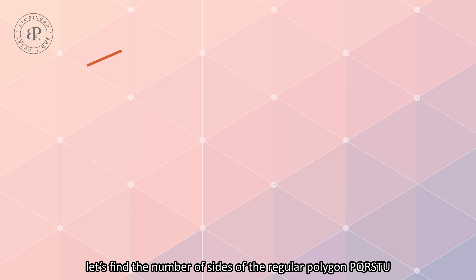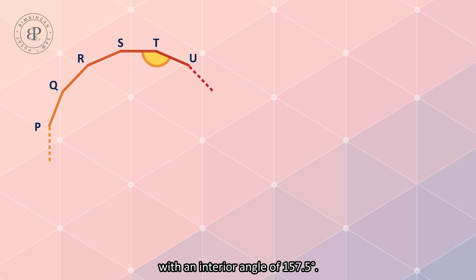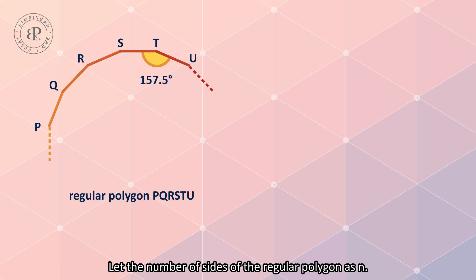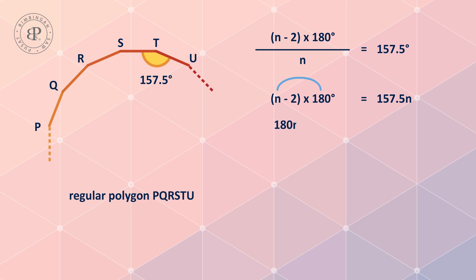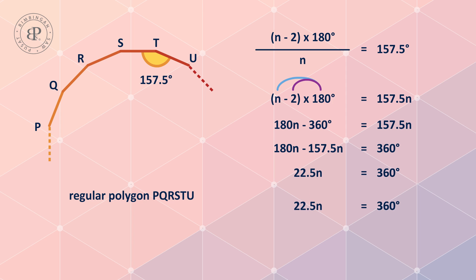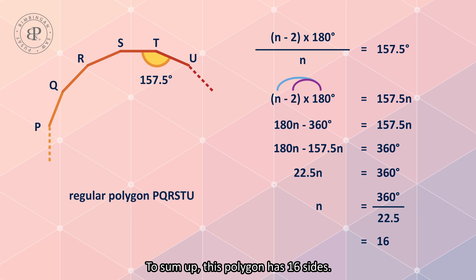Finally, let's find the number of sides of the regular polygon PQ-RSTU with an interior angle of 157.5 degrees. Let the number of sides of the regular polygon be n. To sum up, this polygon has 16 sides.